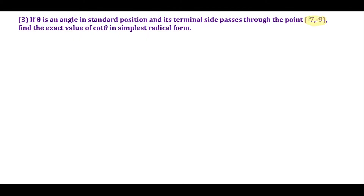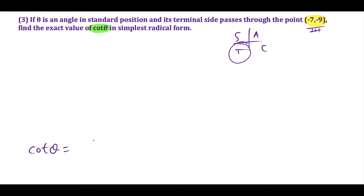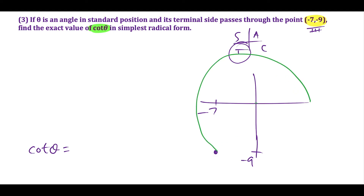Now we're looking at a point in quadrant three, and the goal is to find the exact value of cotangent theta. Right away, using ASTC, I know that in quadrant three tangent and its reciprocal cotangent are positive. So my final answer is definitely positive. We sketch the point (-7, -9) down here, and the angle theta spins from standard position all the way to quadrant three. For angles beyond 90 degrees, we have to use the reference angle.